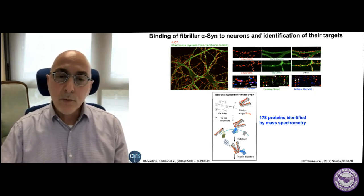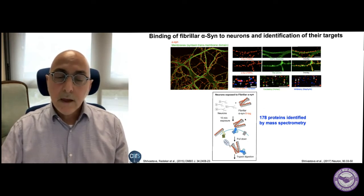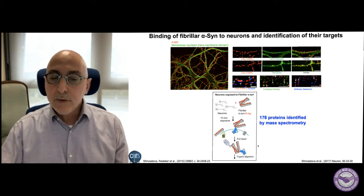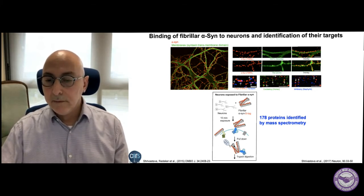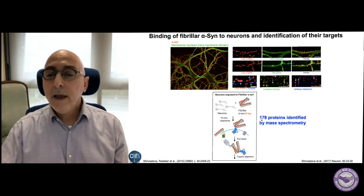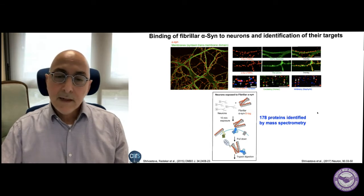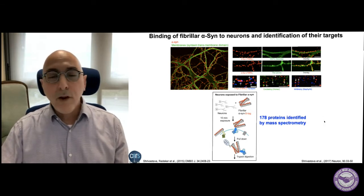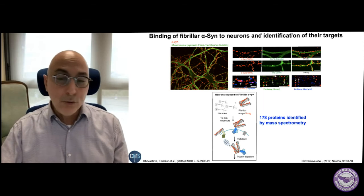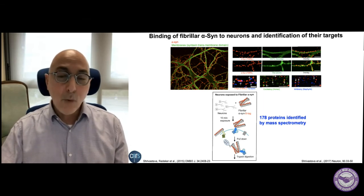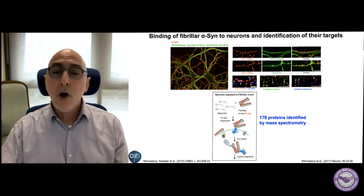We next asked the question: what proteins do these fibrils bind to — what are their receptors? We briefly exposed neurons to tagged fibrils, pulled on the tag, and identified the binding proteins by mass spectrometry. As you can see, we identified 178 proteins. This is somewhat unfortunate because if we had only one or two receptors, we could block them to inhibit fibril binding to the neuron and all the downstream consequences.